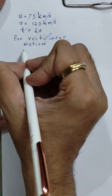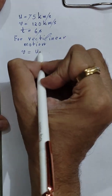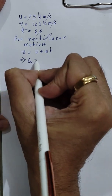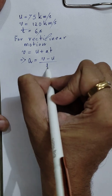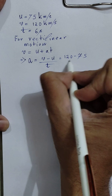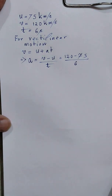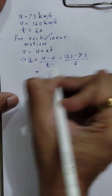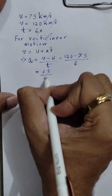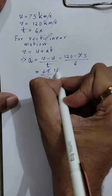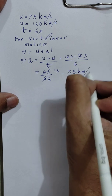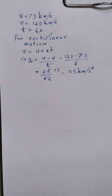For rectilinear motion, we use the equation v = u + at, which gives us a = (v - u) / t. So acceleration = (120 - 75) / 6 = 45 / 6 = 7.5 km/s². That is the acceleration of the spacecraft.